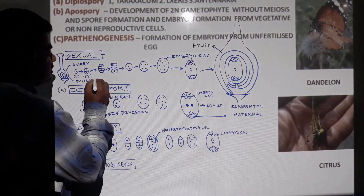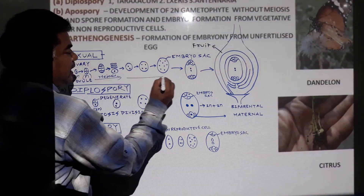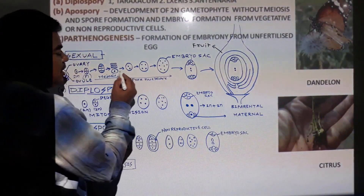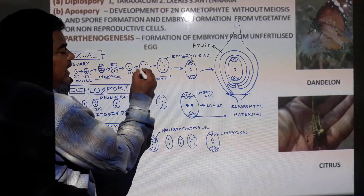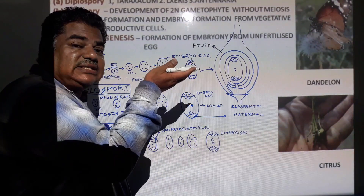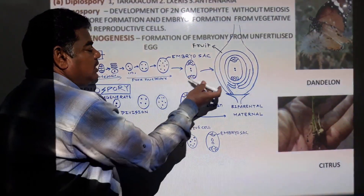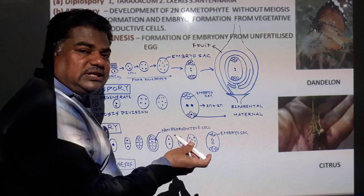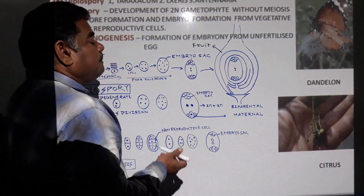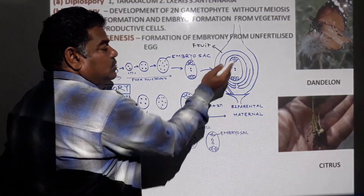First meiosis takes place, then free nuclear division: one nucleus divides into two, two into four, four into eight. Four nuclei move towards the chalazal end, and four towards the micropylar end. One nucleus from each pole moves to the center, forming two polar nuclei. Cell wall formation gives rise to the embryo sac.